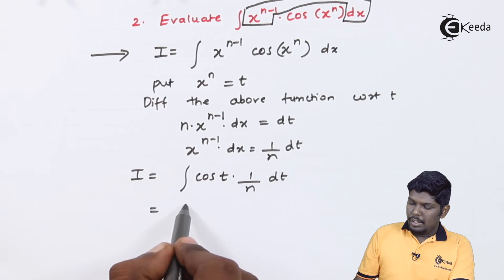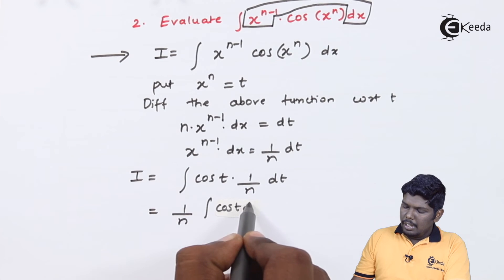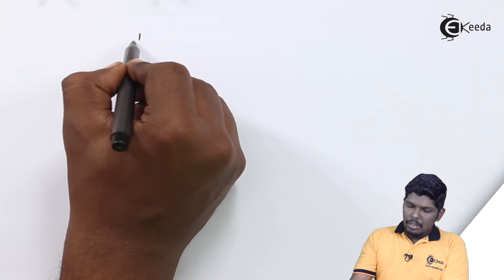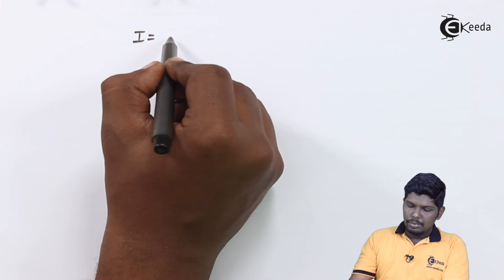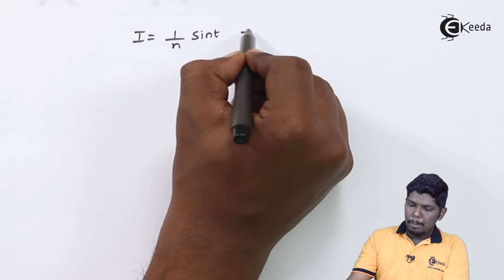1 upon n being constant we can take it out of the integral cos t dt. Now we know that integration of cos t is sin t. This will give you I is equal to 1 upon n sin t plus c.